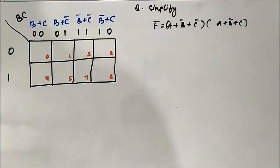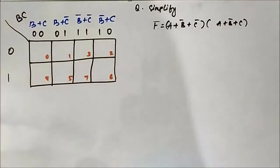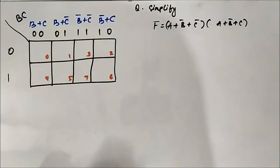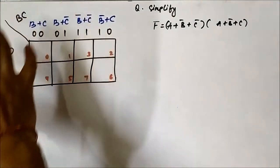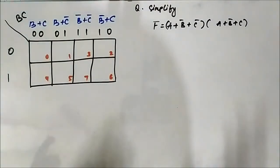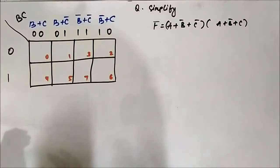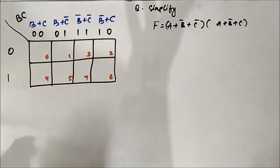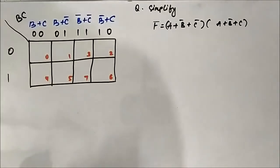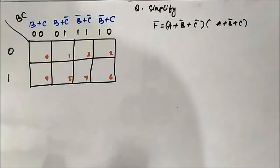Now we can directly go over to the questions. Here we have a POS Boolean expression which is given and we have to simplify it using POS KMAP. Mostly you will have questions related to 3 and 4 variable KMAP. 2 variable KMAPs are simple — there is nothing to simplify in 2 variable KMAP. Mostly you will have 3 and 4 variable KMAP simplification.